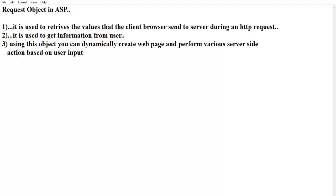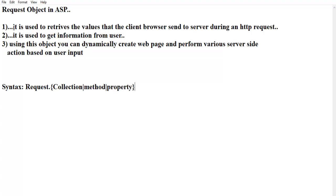Now we are going to see the syntax of the request object. The syntax is: Request dot collection in brackets. Different types of collections are used in request objects. Then the method — if you want to use any method you can define it — or the property, if you want to retrieve any property, you can add it here. This is the syntax of the request object.